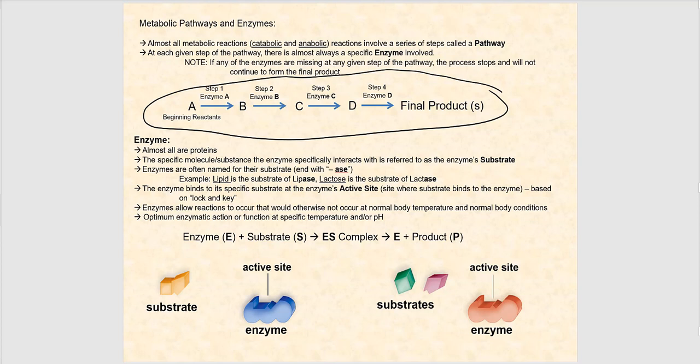For example, lipid is the substrate for lipase, and lactose is the substrate for lactase. An exception is pepsin — it does not end in -ase, and its substrates are proteins. The enzyme binds to its specific substrate at the enzyme's active site, a pocket meant to accommodate that specific substrate. This follows the induced fit model — not a rigid lock and key, but more like shaking someone's hand: your hand fits the other person's, and then you tighten your grip, slightly changing shape. That's the induced fit model — the enzyme hugs the substrate when it fits into the active site.